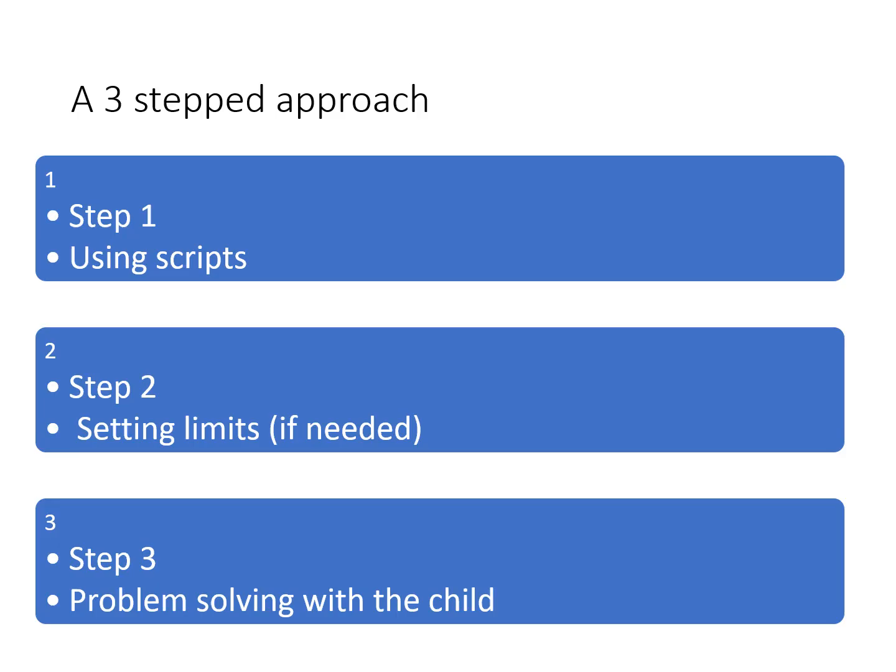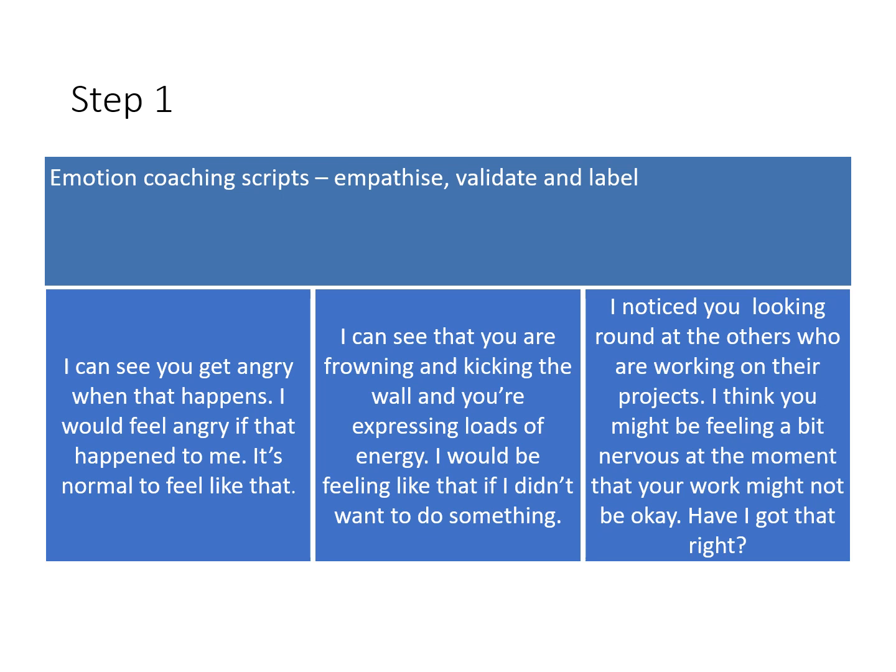I've adapted this into a three-step approach for teachers and parents. Step one: use scripts that enable us to empathise and validate what the child is feeling — acknowledging it and helping them to label it. For example: 'I can see you get angry when that happens. I'd feel angry if that happened to me. It's normal to feel like that.' Importantly, this has to be authentic — your own style, language and way of responding with the children. It can't be manufactured.